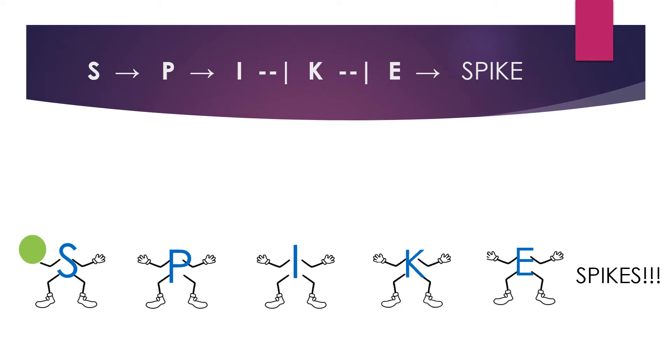We can see from this pathway that S promotes the production of P. P produces I, which blocks K. K would normally block E, but since K is blocked by I, E is able to produce spikes.